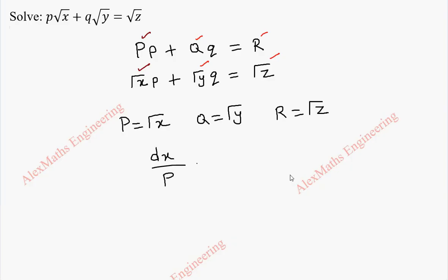To get the solution, we have to solve dx by capital P equal to dy by capital Q equal to dz by capital R. Now replacing P, Q, R, we get dx by root x equal to dy by root y equal to dz by root z.